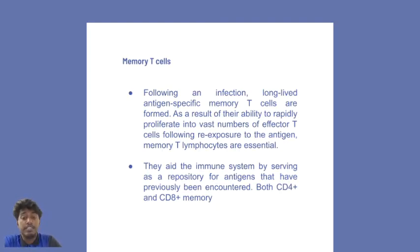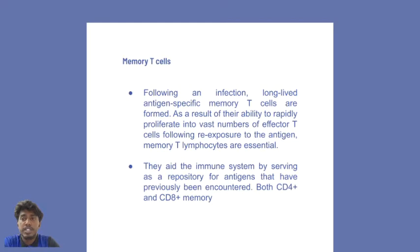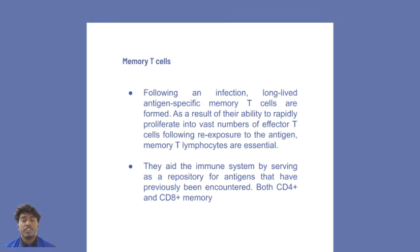Finally, the last type of T-cells is memory T-cells. Following an infection, memory T-cells are long-lived. As a result of their ability to rapidly proliferate into a vast number of effector T-cells following re-exposure to the antigen, memory T-helper cells are essential. They aid the immune system by serving as a repository of the antigen encountered, encompassing both CD4 and CD8 memory T-cells.